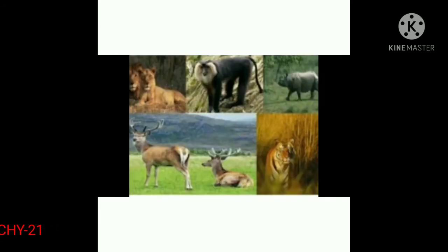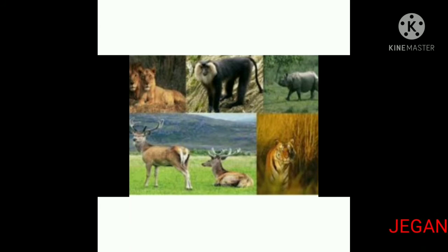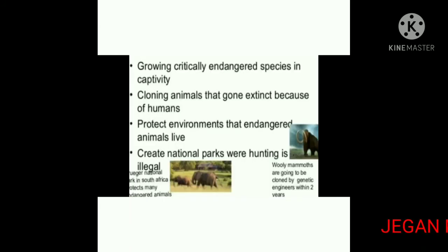Next, the causes for endangerment. The following reasons make an animal or a plant endangered or extinct. Forests which provide food and shelter to animals are destroyed for human needs. A large number of animals are hunted for their horns, skin, teeth, and many other valuable products.